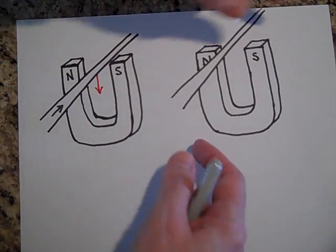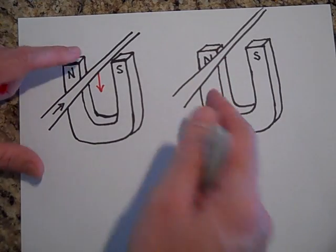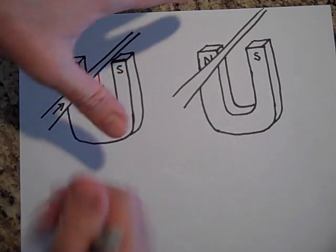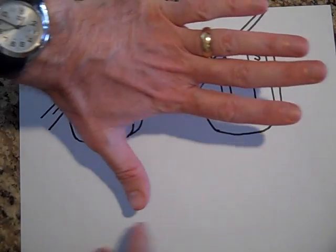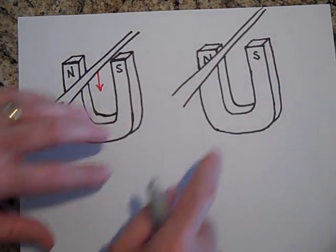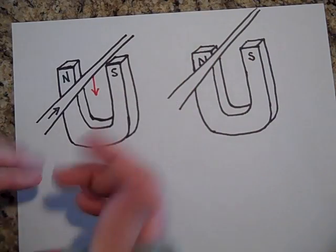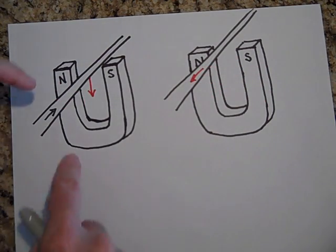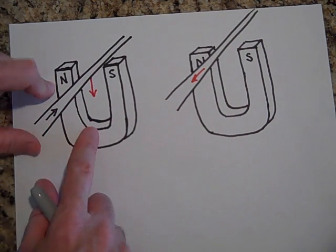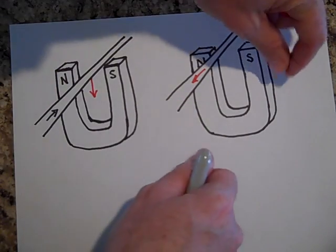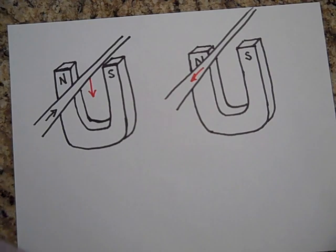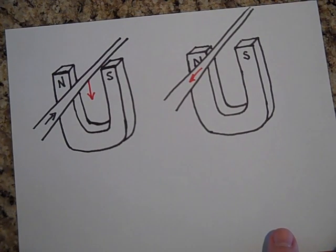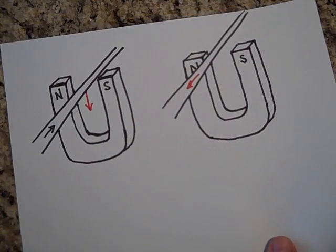But you can do the opposite: by forcing this wire down you can get current to flow in it. If I push the wire down, electrons are moving down. Using my left hand — thumb pointing down, field going that way — the electrons get pushed down the wire that way. Electrons moving that way means conventional current flows the other way. So we took mechanical energy and made electrical energy. That's what Faraday's law is about: taking mechanical energy and making electrical energy.